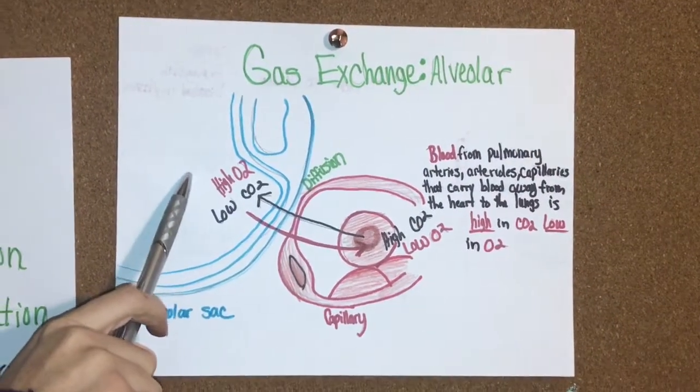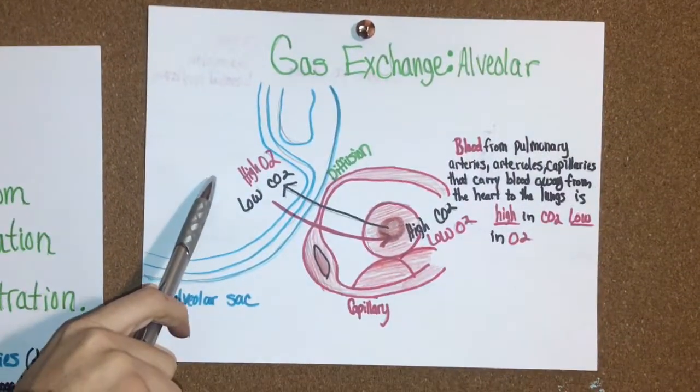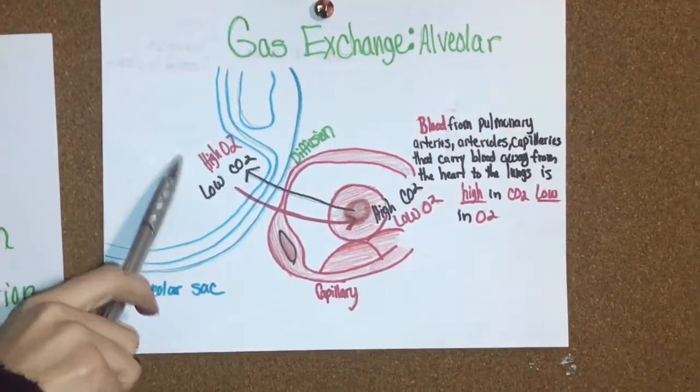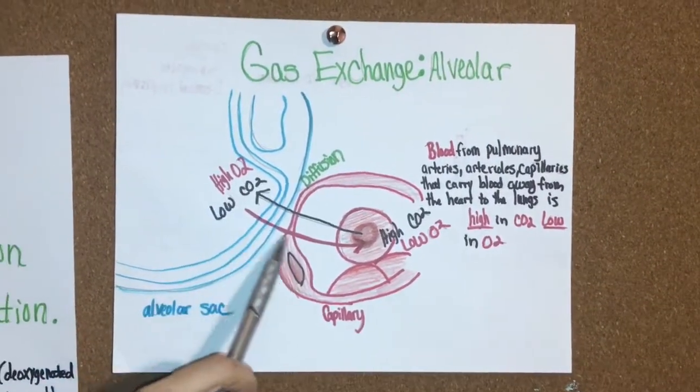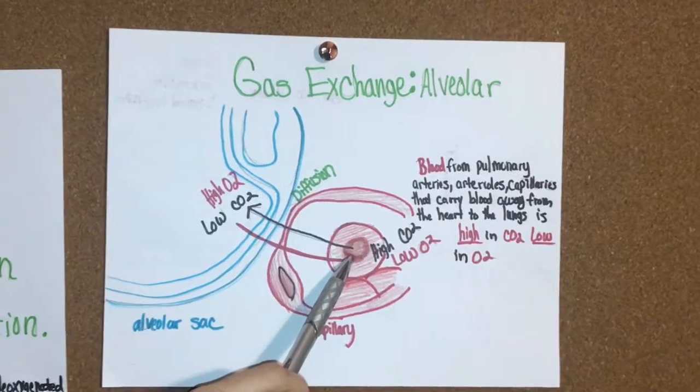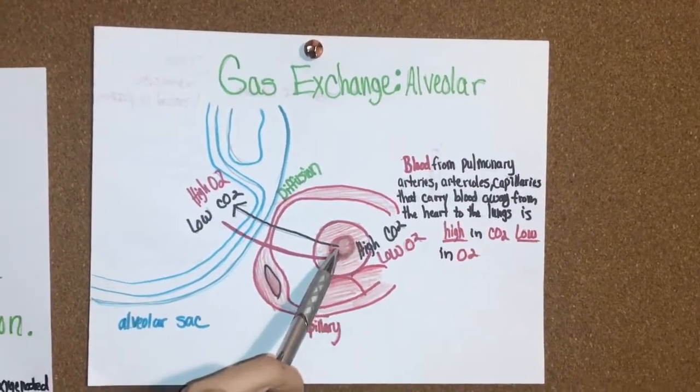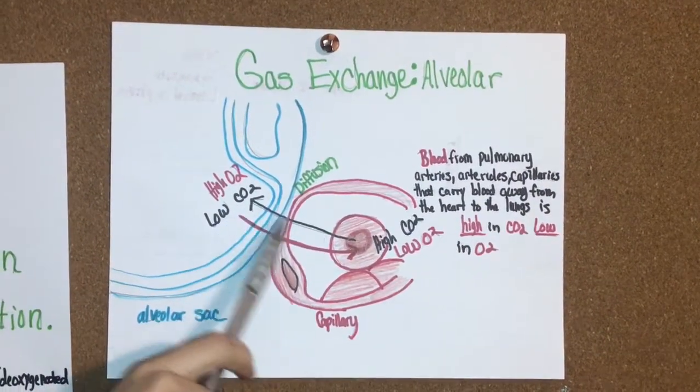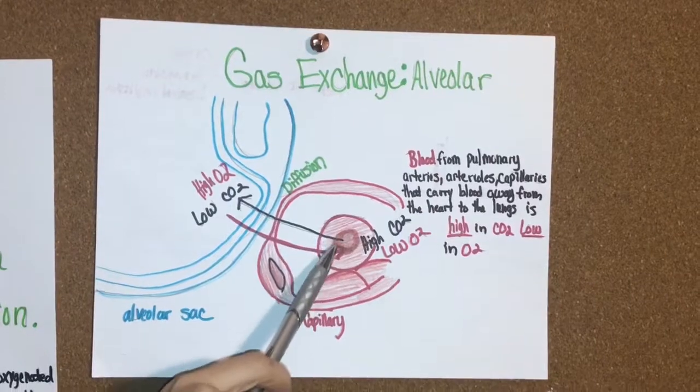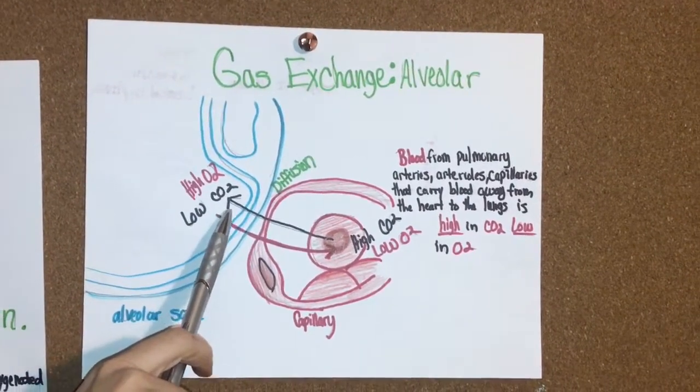The oxygen is in high concentration in the alveolar from when you inhale, and it's going to be picked up by the red blood cell that's deficient in oxygen. Then the red blood cell is higher in carbon dioxide and the alveolar is low in carbon dioxide. So naturally diffusion will happen from place of high concentration to the place of lower concentration.